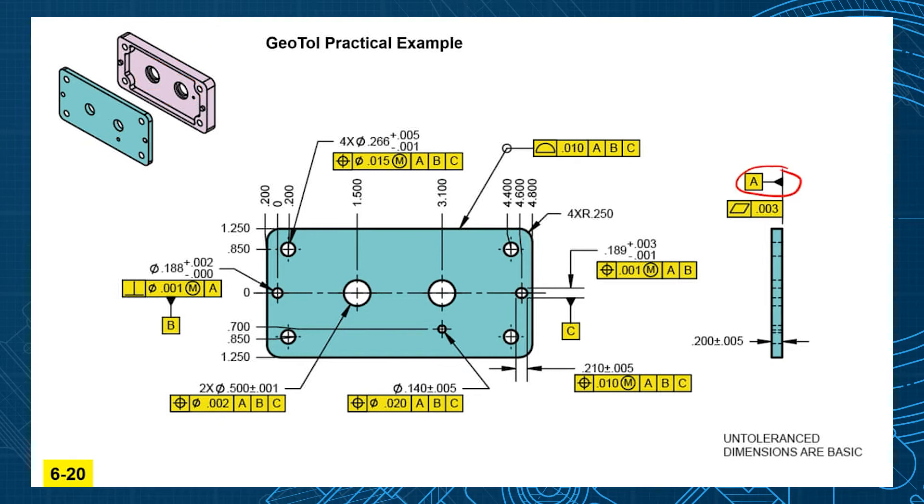So A, almost obvious on this one, that big face is going to set up our primary datum plane. Now how they're aligned to each other is using alignment holes and alignment pins. So there's a hole here and there's a slot here. And so this pin goes into this slot and this hole goes over that pin.